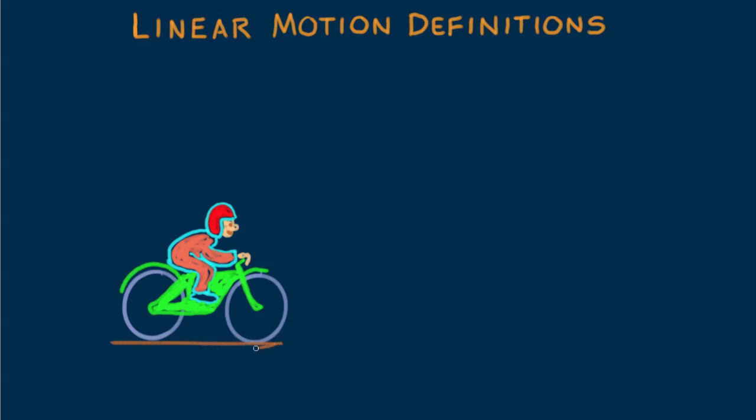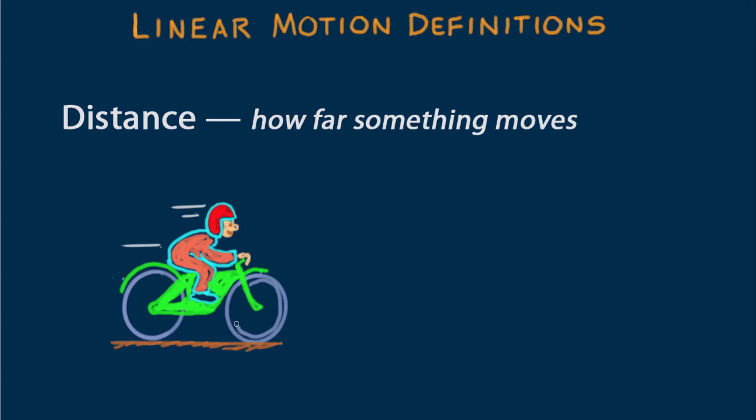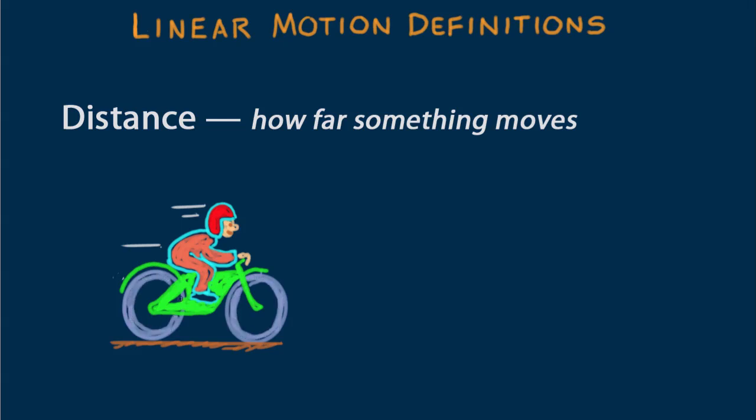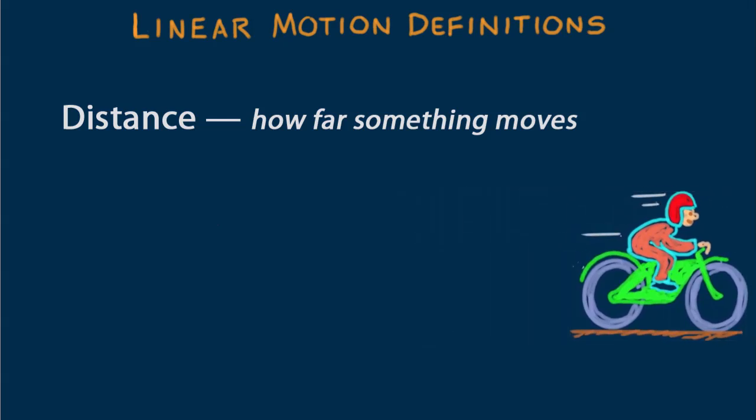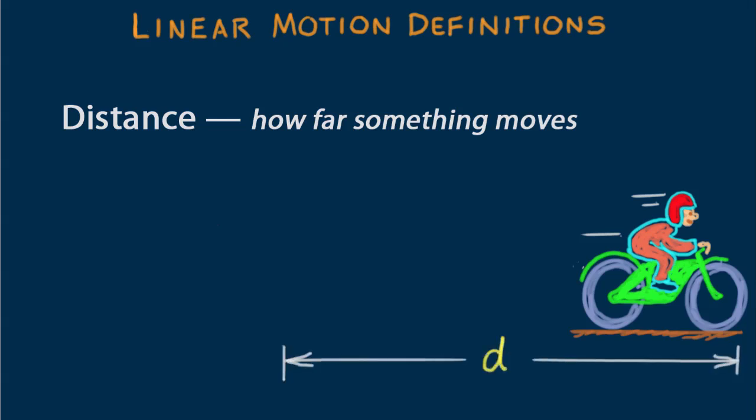Distance as used in physics is the same as distance in everyday language. How far something moves. It's measured in meters, or some other length unit. Distance doesn't depend upon direction, because it's a scalar quantity, which can be described by how much, not which direction. Here we see that Barry Biker has moved a distance d.